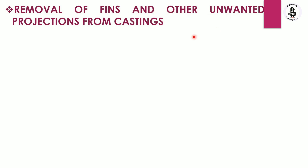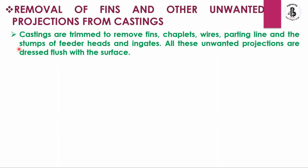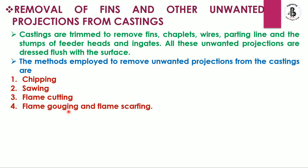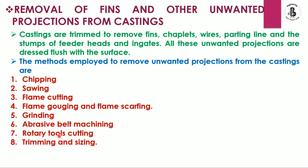For removal of fins and other unwanted projections, castings are trimmed to remove fins, chaplets, wires, parting lines, and the stumps of feed heads and ingates. All these unwanted projections are dressed flush with the surfaces. Methods employed include: chipping, sawing, flame cutting, flame gouging and flame scarfing, grinding, abrasive belt machining, and rotary tool cutting, trimming, and sizing.